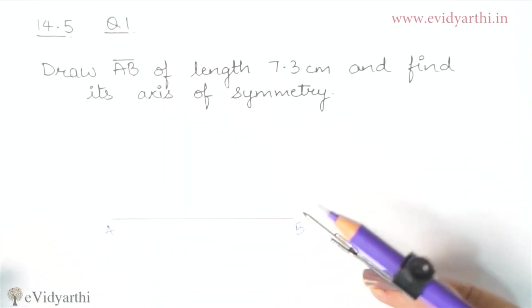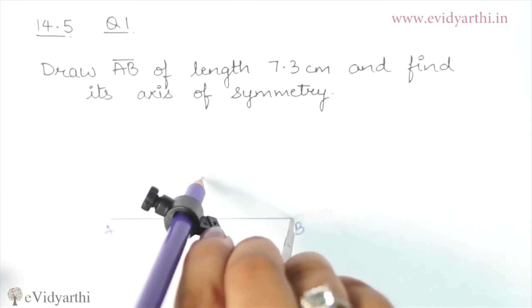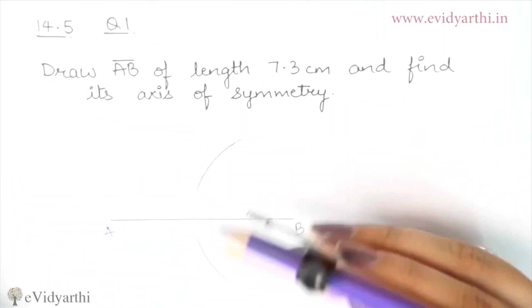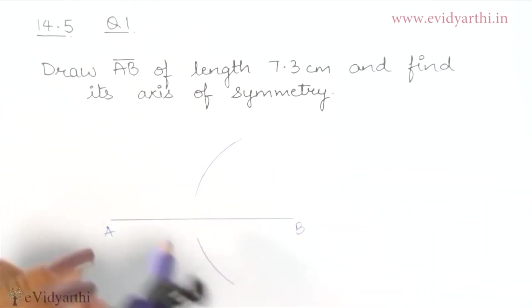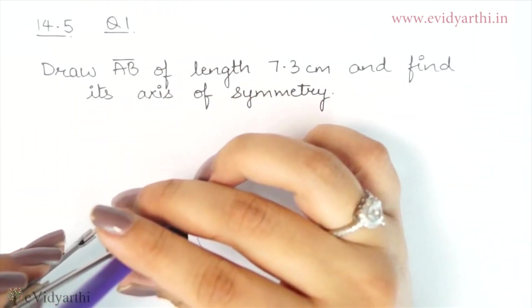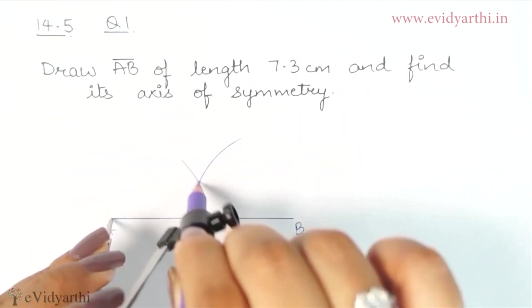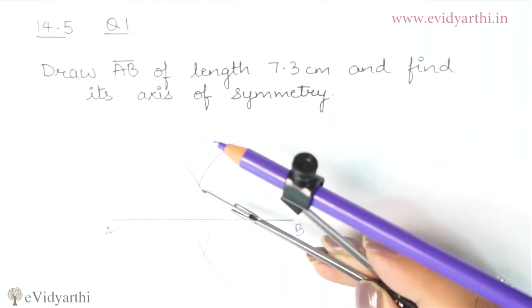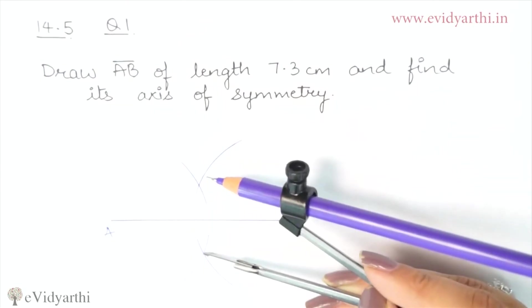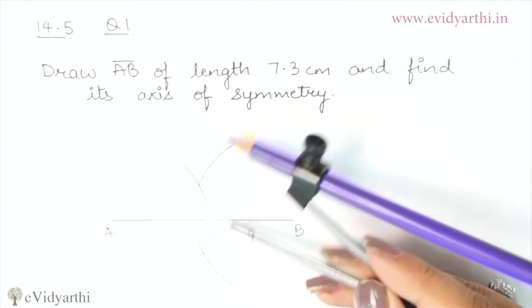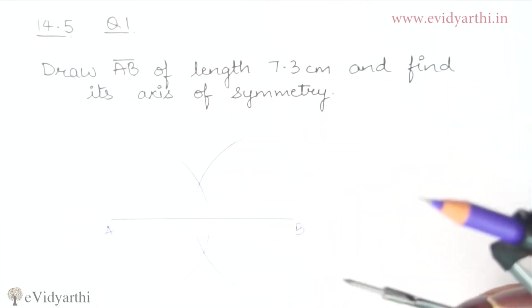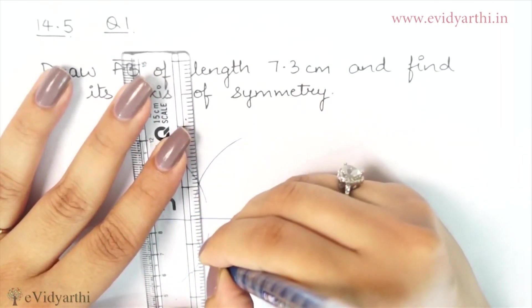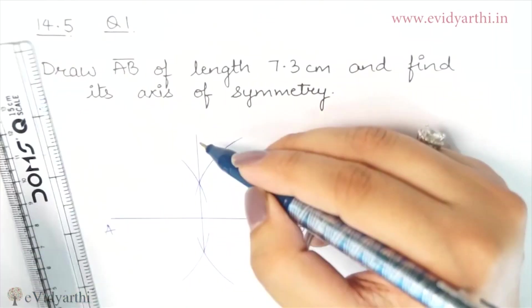Now, keeping the compass at B point, we draw arcs above and below the line. Similarly, we do the same from point A — placing the compass at A and drawing arcs above and below, intersecting the previous arcs. Now you will have two intersecting points — one on the upper side and one on the lower side. We will join these two points to get a line.